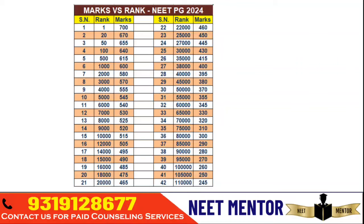A score of around 580 puts you in top 2000; 570 in top 3000; 555 in top 4000; 545 in top 5000; 540 in top 6000; 537 in top 7000; 525 gives rank around 8000; 520 around 9000; 515 around 10,000; and 512 around 12,000.